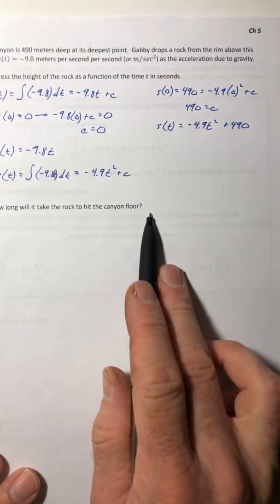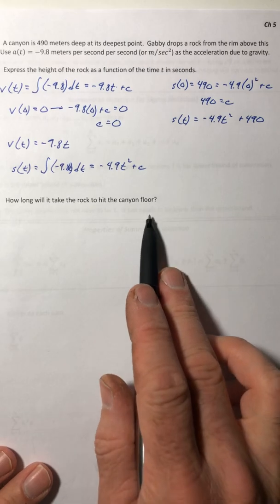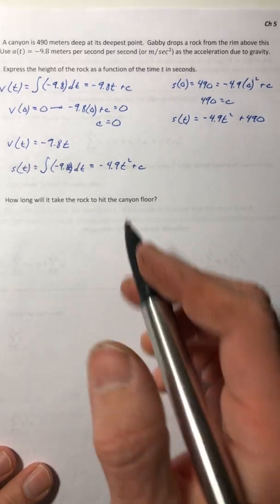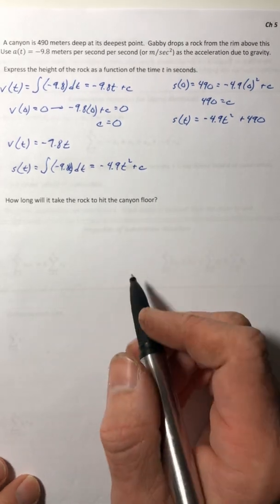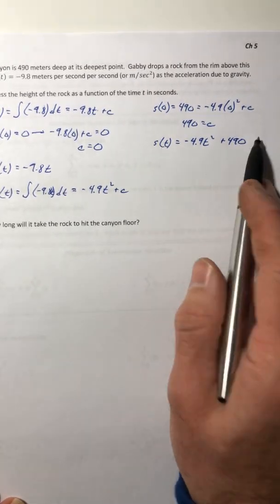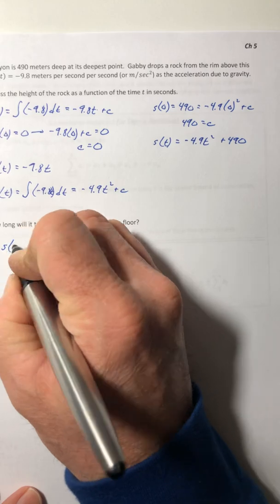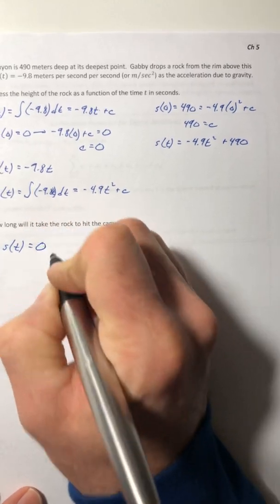All right, so the last part, how long will it take to hit the canyon floor? Well, it's hitting the ground. So the height of the ground or the floor is going to be 0. So you got to take your position function and set it equal to 0 and solve it.